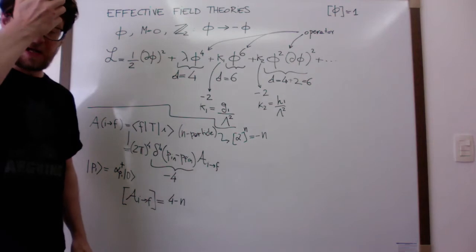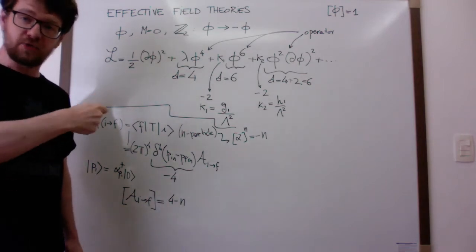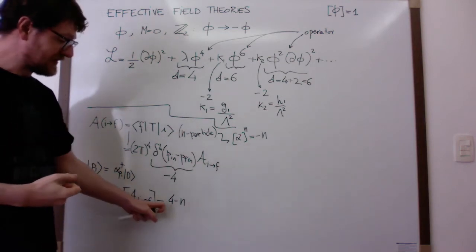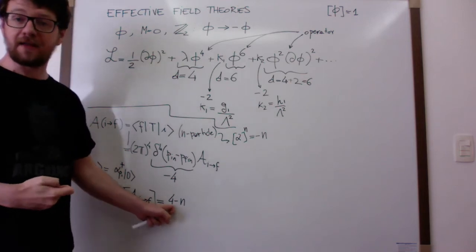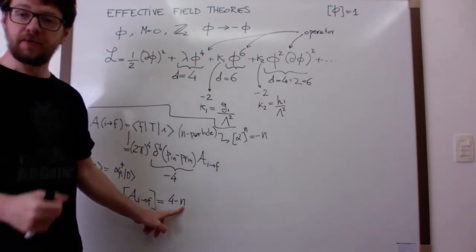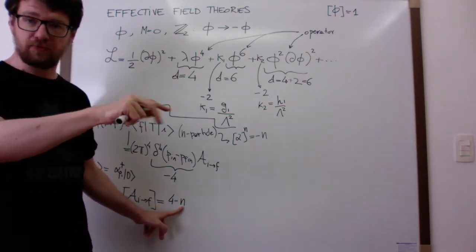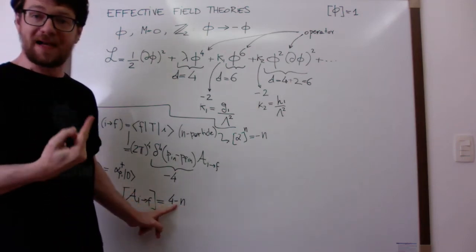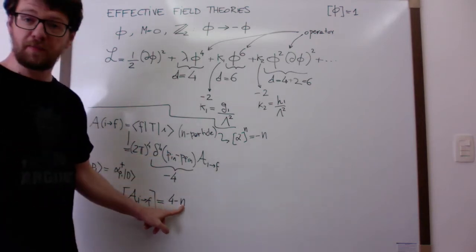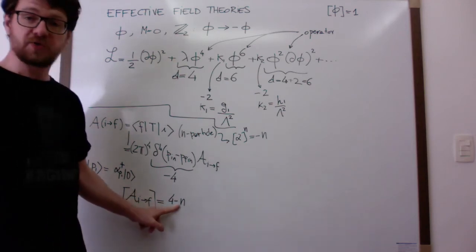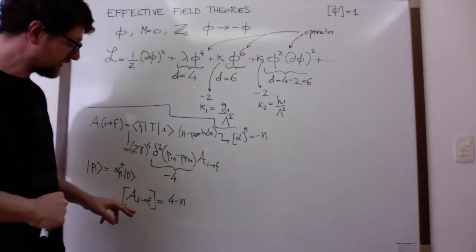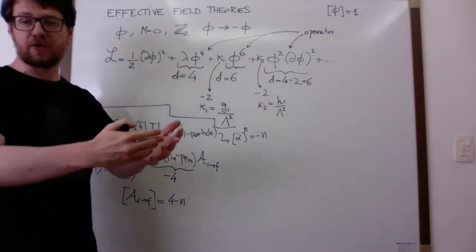This gives a non-trivial cross-check: when you write down your Feynman rule result, you can verify the amplitude has the correct dimensions. For a three-body process like a particle decay, the amplitude must have dimension plus one. For two-to-two scattering — four particles — the amplitude must be dimensionless. For two-to-three scattering — five particles — the amplitude has dimension minus one, and so on.